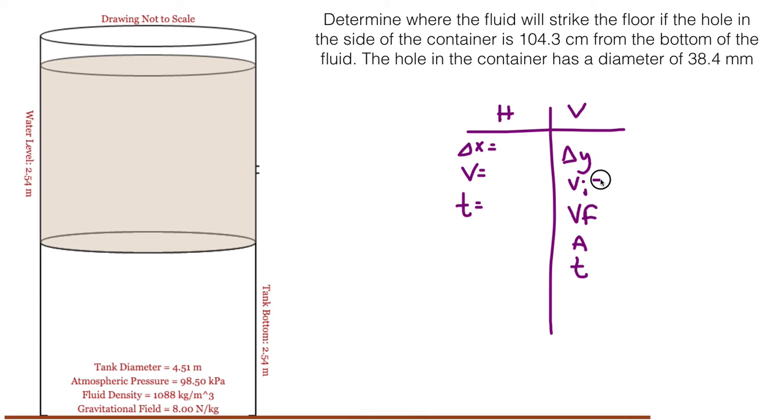The initial velocity is going to be 0 in the vertical direction. The value we found from the first part of the problem, the speed of the water leaving the tank, that will go on the horizontal side. The acceleration, we use our planet's acceleration at negative 8. And the delta Y would be the height from which it came out of the hole, which was 3.58. Make sure you make that negative since it's going to be going down. Then use your equations to find time. Take that time, plug it in over here, and solve for delta X.